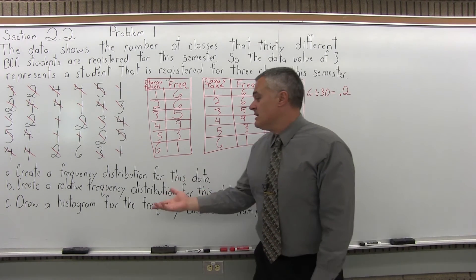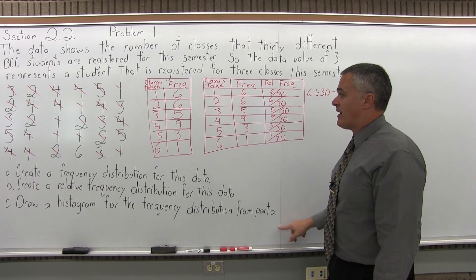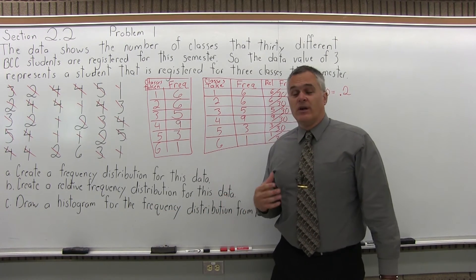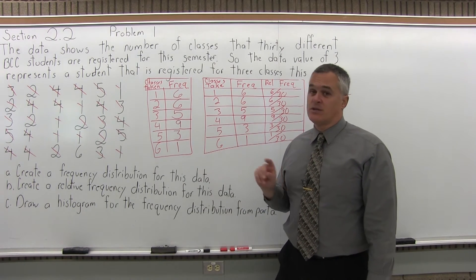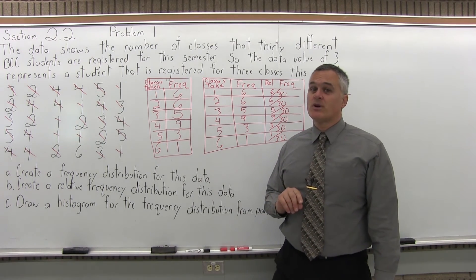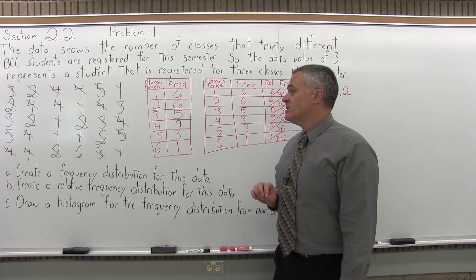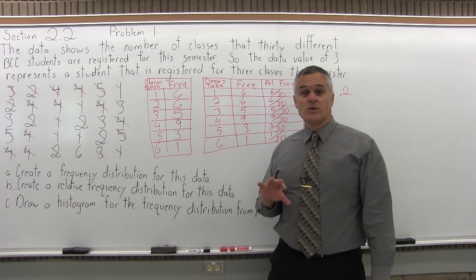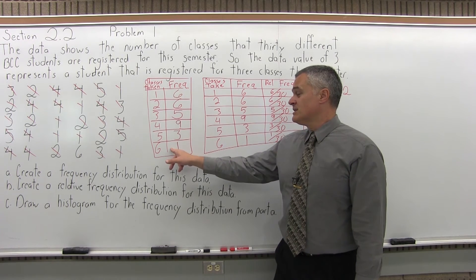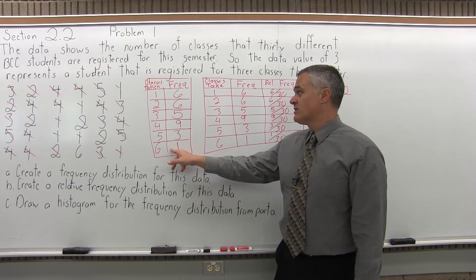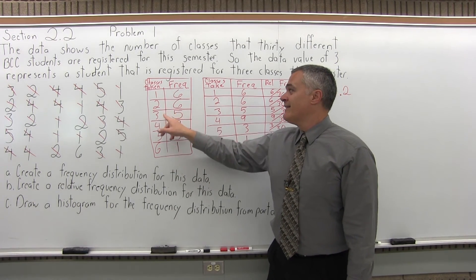Part C says draw a histogram for the frequency distribution from Part A. A histogram is a special type of bar graph. The bars can only be drawn vertically for a histogram, and they have to touch. If it just says bar graph, you can go horizontal or vertical and they're not supposed to touch. For a histogram specifically: vertical only, no horizontal, and they have to touch.